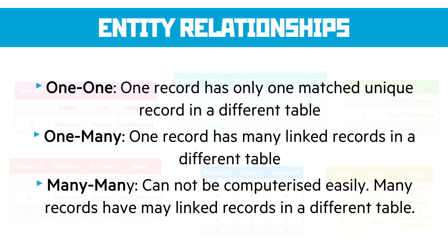Entity relationships are how we talk about the relationships between tables. We've got some options: one-to-one, which you will rarely if ever use because one record has to have a matched unique record in a different table — this is only really done if part of that record needs to be secured differently. The most common is a one-to-many relationship, where one record has many linked records in a different table, and that's the easiest one to computerize. Many-to-many is where many records have many links, but it cannot be computerized easily, so we tend to convert a many-to-many to a one-to-many relationship by using a linking table.